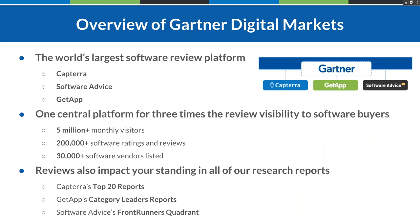The GDM network is made up of three top software comparison websites: Capterra, Software Advice, and GetApp. In December of 2016 we started sharing reviews across the three sites, giving each review up to three times the exposure — making us the largest network of software reviews on the internet. We receive over 5 million monthly visitors, have over 200,000 software ratings and reviews, and over 30,000 vendors listed. We take review quality very seriously with clear submission guidelines, a zero-tolerance policy, and a team that validates each review.